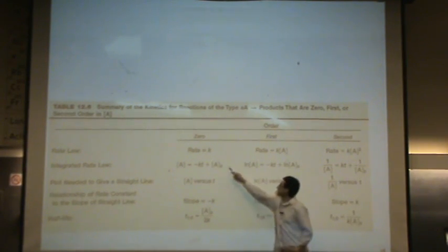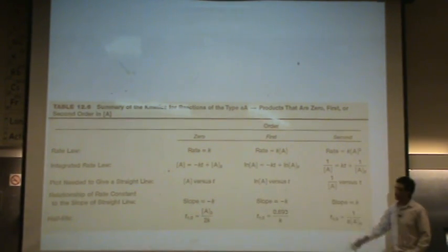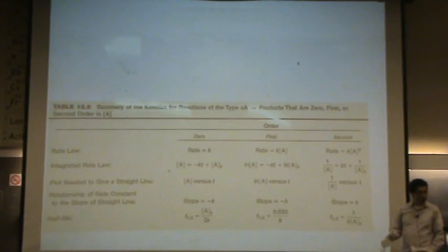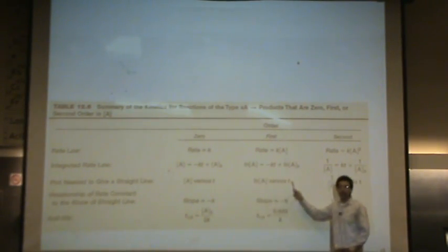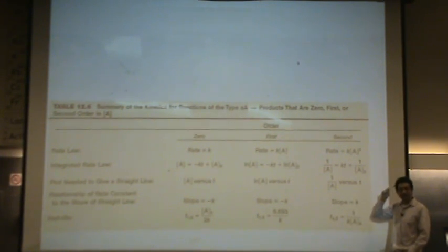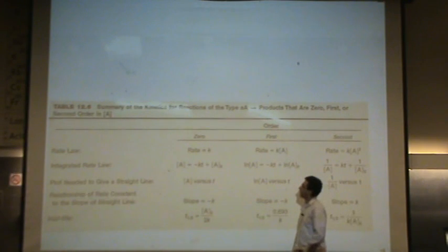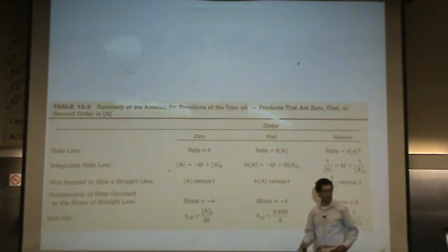Here's the three integrated rate laws I will give you. Depends on the order, which one you'll use. And then, you need to know what to plot to get a straight line. So, that's something you should know. What do I plot to get a straight line so that I can show the order?